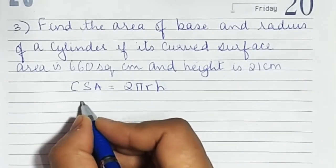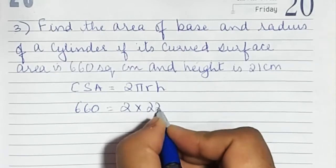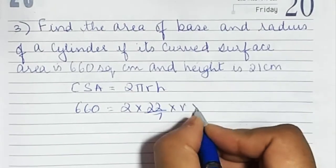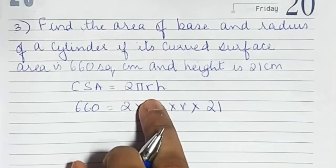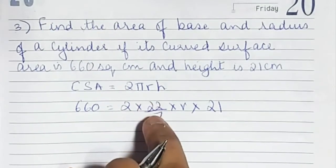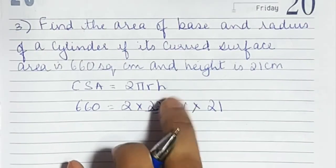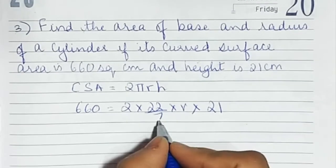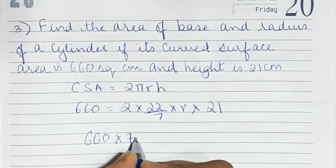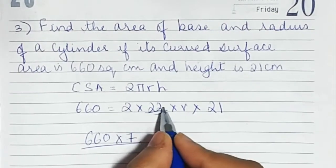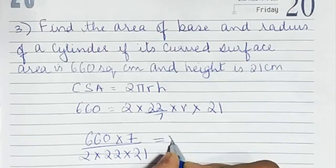We have curved surface area as 660. We have to find r, and h is 21. Once we get r from here, we can find the area. So let's find r first. This 7 goes on top, so 660 into 7 — whatever is on top comes down. 2 into 22 into 21 is equal to r.